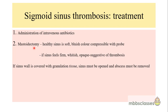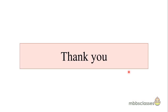For sigmoid sinus thrombosis, mastoidectomy is the treatment of choice along with broad-spectrum intravenous antibiotics. During mastoidectomy, a healthy sigmoid sinus appears soft, bluish, and compressible with a probe; if the sinus feels firm, whitish, and opaque, this is suggestive of thrombosis. If there is abscess inside the thrombosis, the sinus must be opened and the abscess removed. Sigmoid sinus thrombosis will be discussed in more detail in another video. With this I come to an end of this video — thank you for watching.